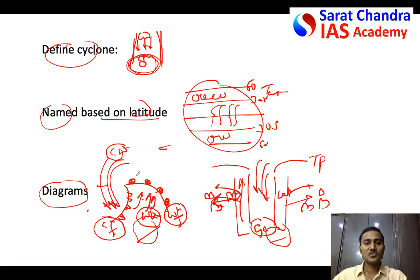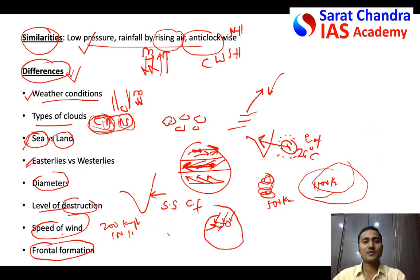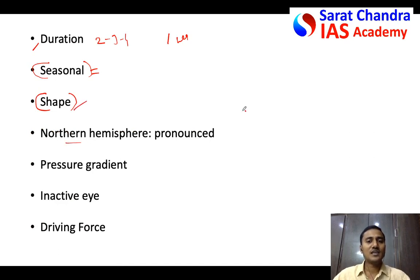Tenth difference: shape. Temperate cyclones have an inverted V shape, while tropical cyclones have an elliptical shape. There is a clear difference in the shape of the two types of cyclones.